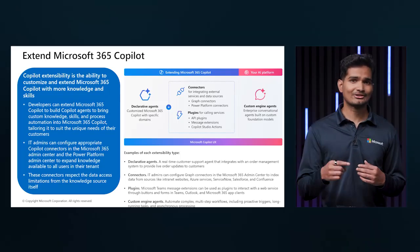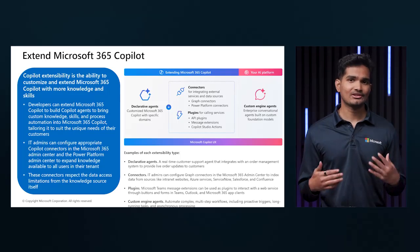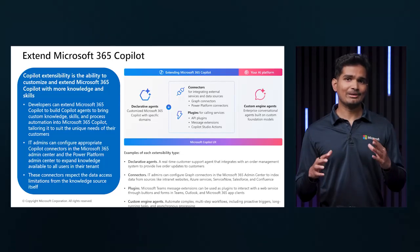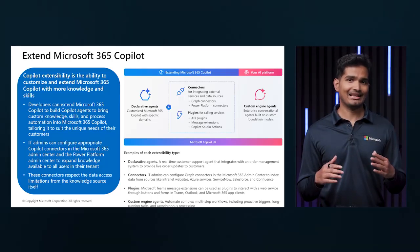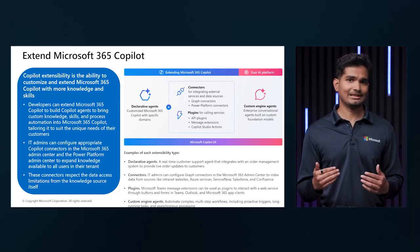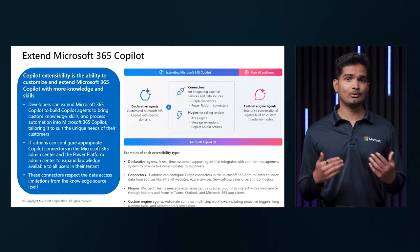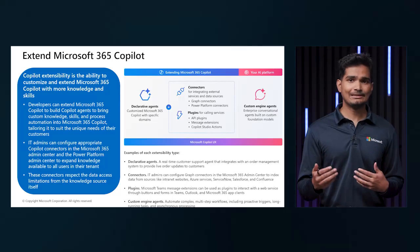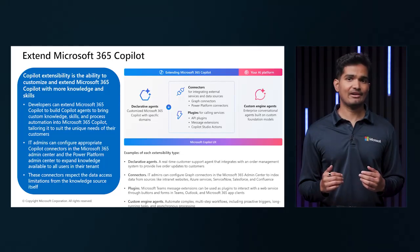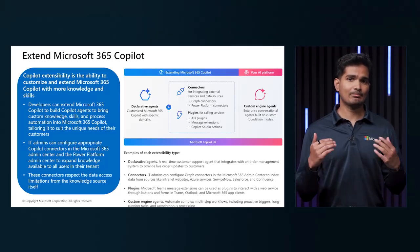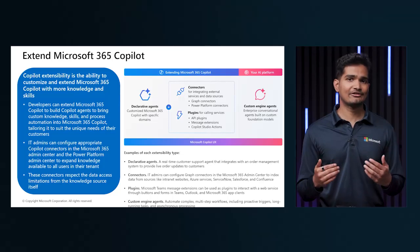Plugins are used for calling services and can even perform actions. An example of a declarative agent would be a real-time customer agent that integrates with an order management system and can provide live order updates to customers. An example of a plugin would be Teams extensions to interact with web services through forms in Teams, Outlook, and other M365 app clients. Custom engine agents can automate complex multi-step workflows, including proactive triggers, and execute long-running tasks.